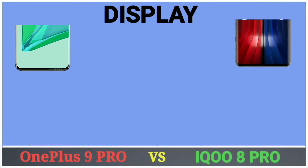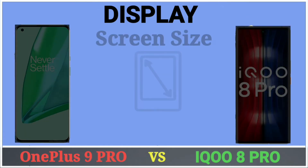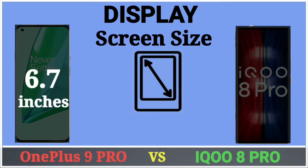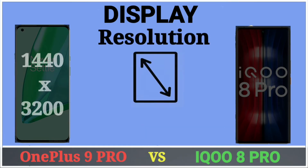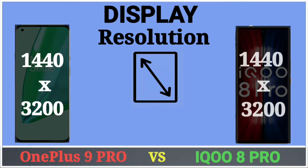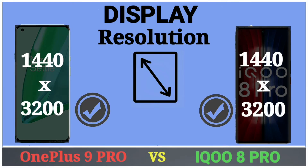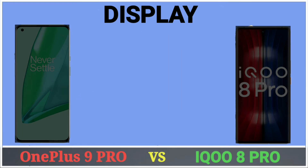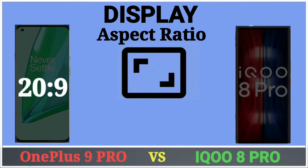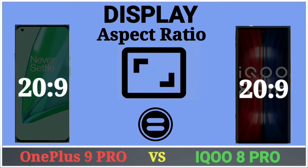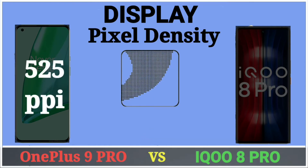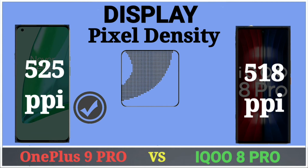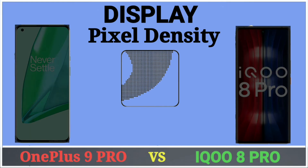Display. OnePlus 9 Pro has a 6.7 inch screen size and Vivo iQOO 8 Pro has 6.78 inches screen size. Both phones have 1440x3200 resolution and a 20:9 aspect ratio. OnePlus 9 Pro has 525 ppi and iQOO 8 Pro has 518 ppi pixel density.